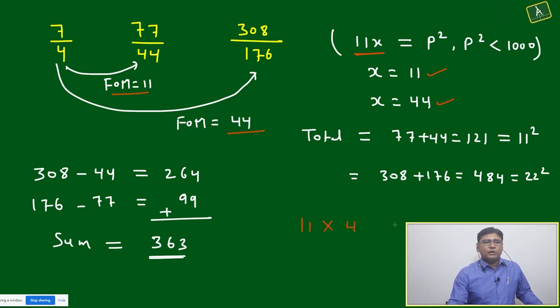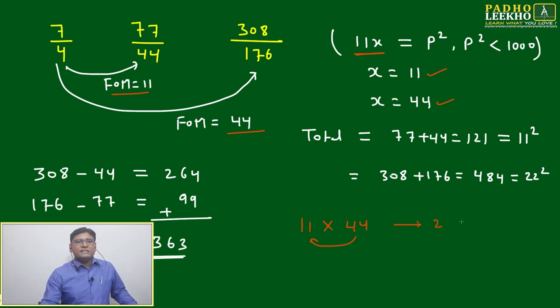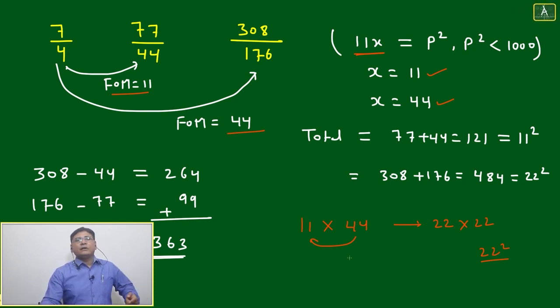Or x must be equal to 44 to again make it perfect square because 11 into 44 if you are doing, then from here to you can shift there and we can write 22 into 22, it will become 22 square. These two numbers only will be feasible less than 1000.